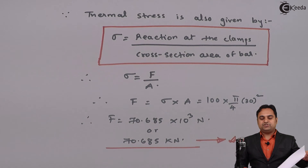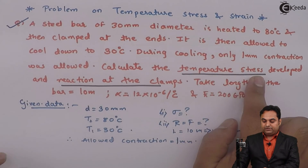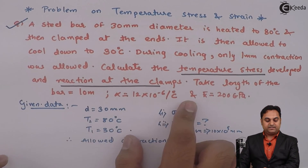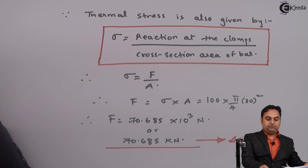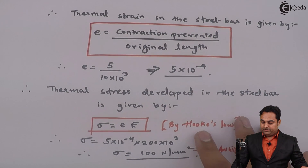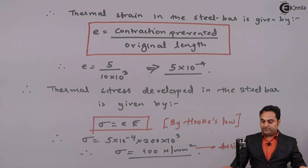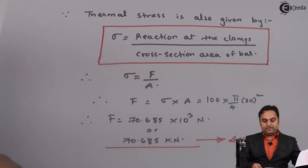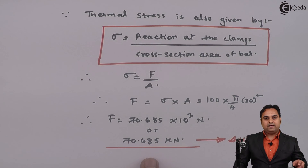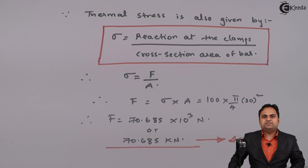Looking at the question, there were two things asked: the temperature stress and the reaction at the clamp. We have found out the temperature stress as 100 N per mm square and the reaction at the clamp as 70.685 kN. With this, we complete the question.